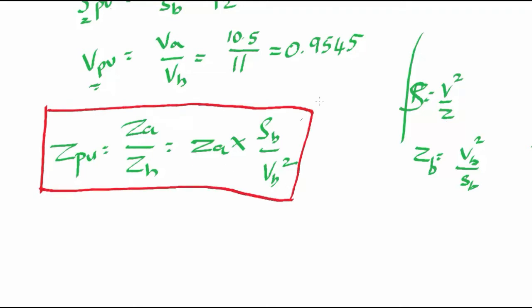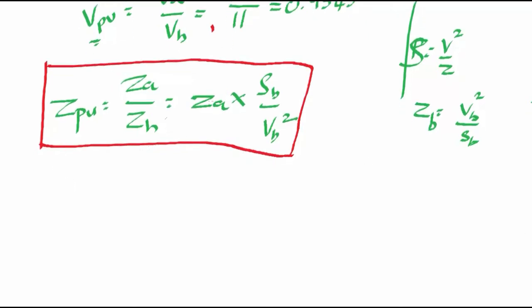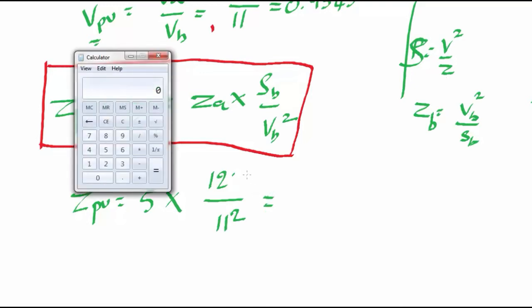In most power systems analysis we deal with conversion of actual impedance values into per unit values and converting them back to actual values. Please remember this formula — that's why I have kept it in a red box. Now substituting values: Z per unit = 5 × 12 MVA / (11)² = 5 × 12/121 = 0.495 per unit.